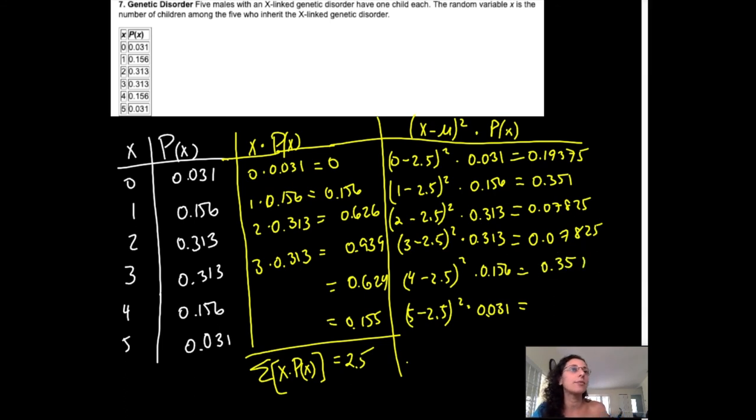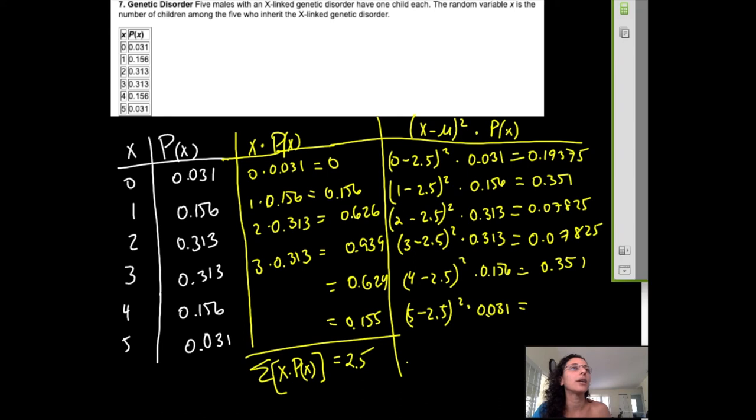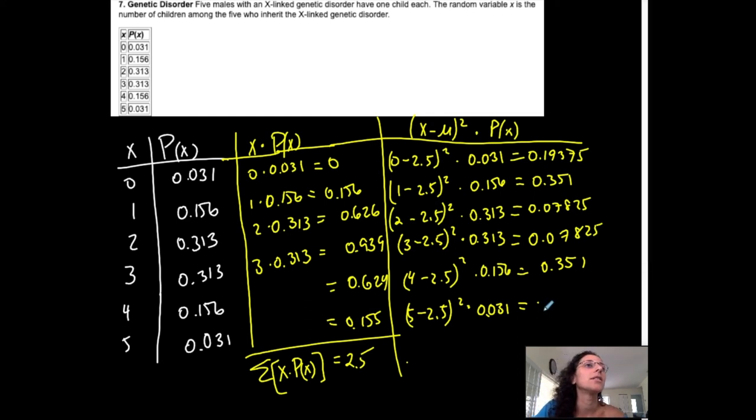I'm noticing symmetry again. 5 minus 2.5. This should be the same as the first one. Then squared. Then times. This is not always the case. This is just very nice and symmetric, which means it's normally distributed. 0.19375.